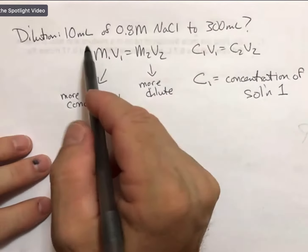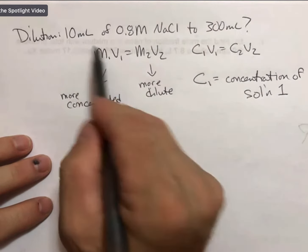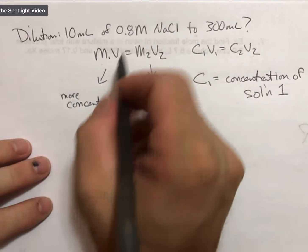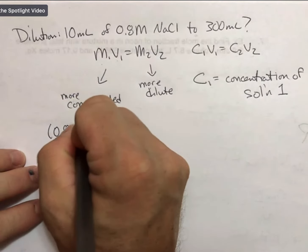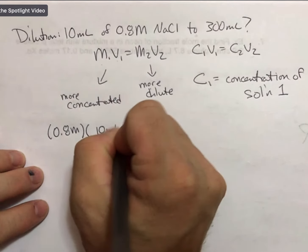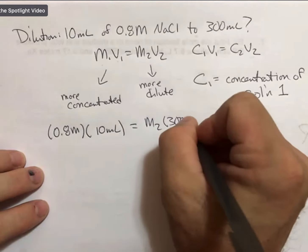And my M2V2 are my more dilute. Since I have a smaller volume, this 10 milliliters must be my V1, and my M1 is 0.8. My M2 is unknown, and my V2 is 300 milliliters.